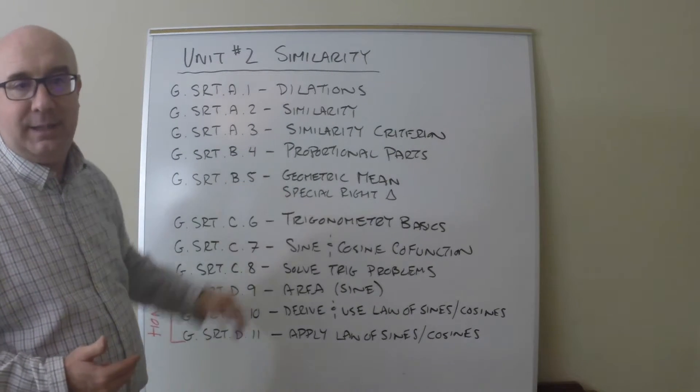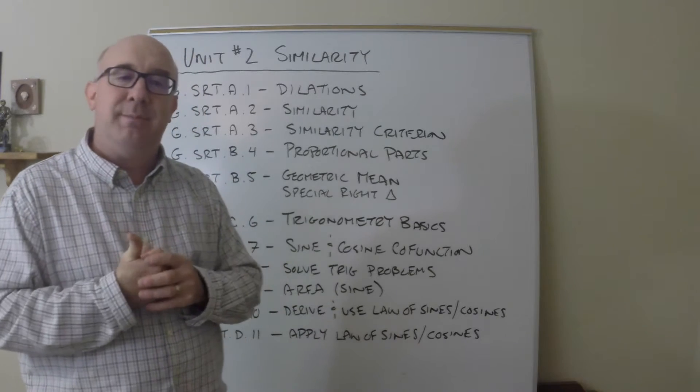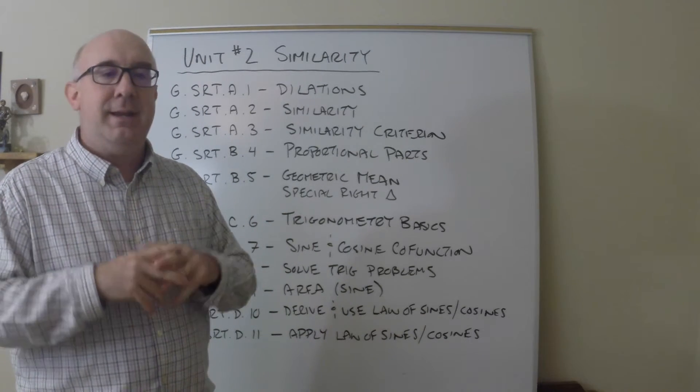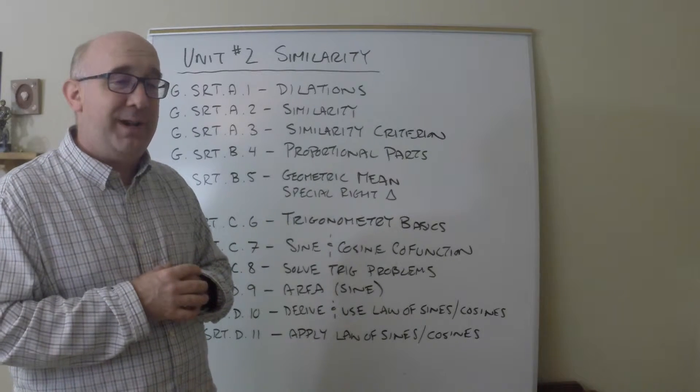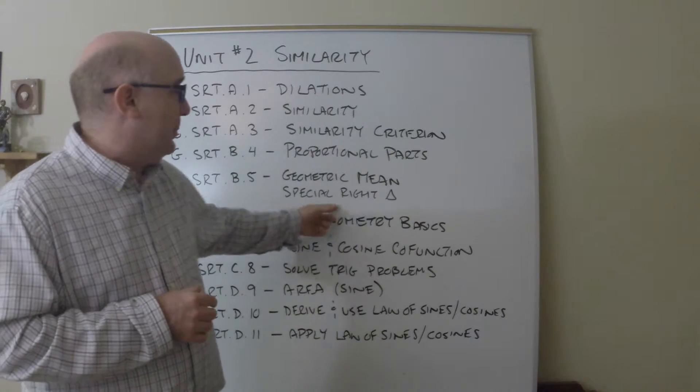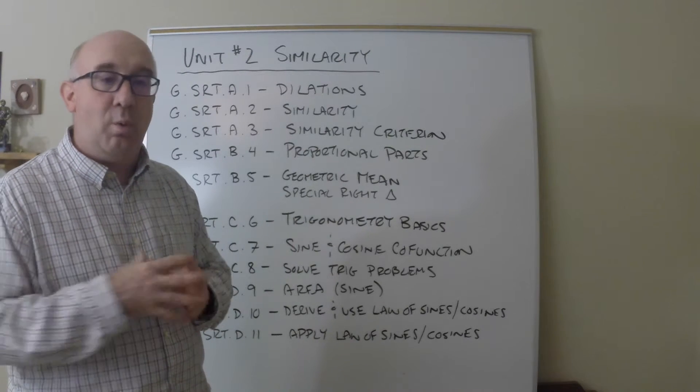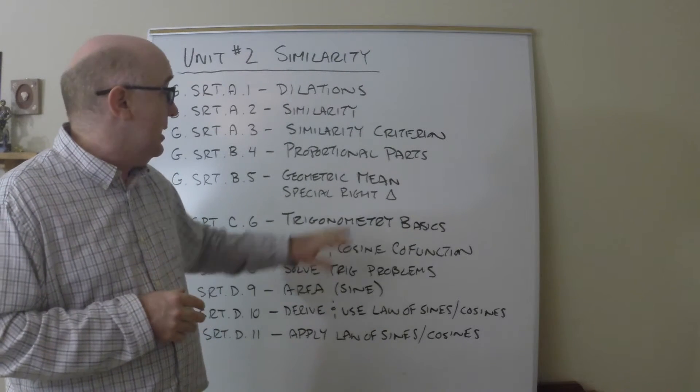Then we bridge similarity to trigonometry using geometric mean, beautiful relationships of similarity, and of course special right triangles. They help us greatly establish later things that we're going to want to do with special right triangles.